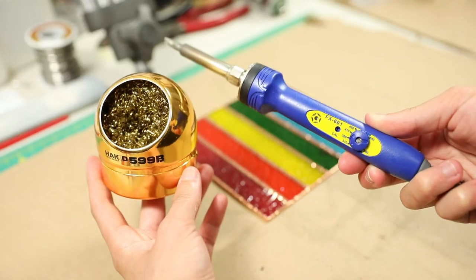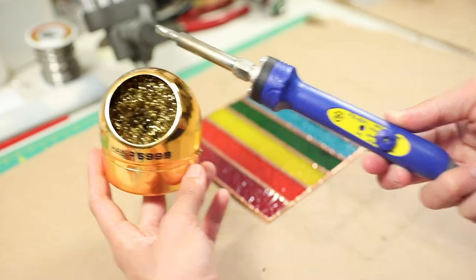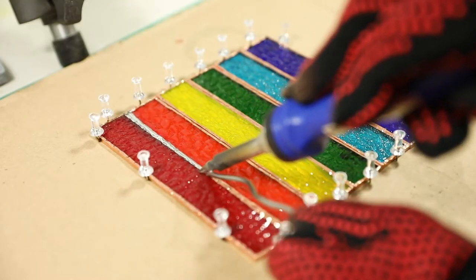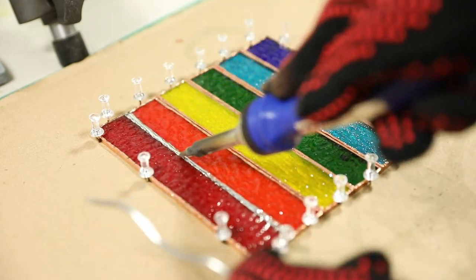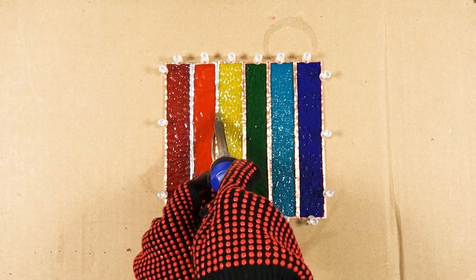Once your soldering iron is fully heated, clean the tip using a wire type tip cleaner. Now, when soldering, hold your soldering iron at a 45 degree angle to the glass. Then, keep your solder under your soldering iron as you go along the seam.